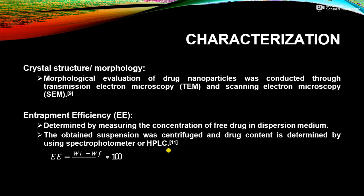Looking at the equation on screen: entrapment efficiency (%) = (weight of initial drug − weight of free drug) / weight of initial drug × 100. In other words, percentage entrapment efficiency is the ratio between drug loading and theoretical drug loading, multiplied by 100 — that is, drug loading divided by theoretical drug loading, multiplied by 100.